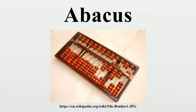The Abhidharmakośabhāṣya of Vasubandhu, a Sanskrit work on Buddhist philosophy, says that the 2nd century CE philosopher Vasumitra said that placing a wick on the number one means it is a one, while placing the wick on the number hundred means it is called a hundred, and on the number one thousand means it is called a thousand — perhaps it was a type of abacus. Around the 5th century, Indian clerks were already finding new ways of recording the contents of the abacus. Hindu texts used the term 'sunya' to indicate the empty column on the abacus.